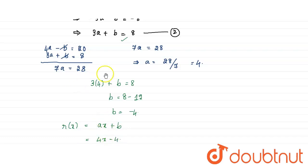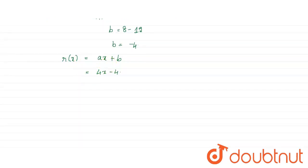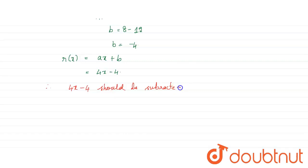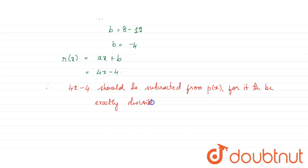So we have the value of B as well. R of x equals Ax plus B, that is 4x minus 4. Therefore, 4x minus 4 should be subtracted from P of x for it to be exactly divisible by Q of x. This is our final answer.